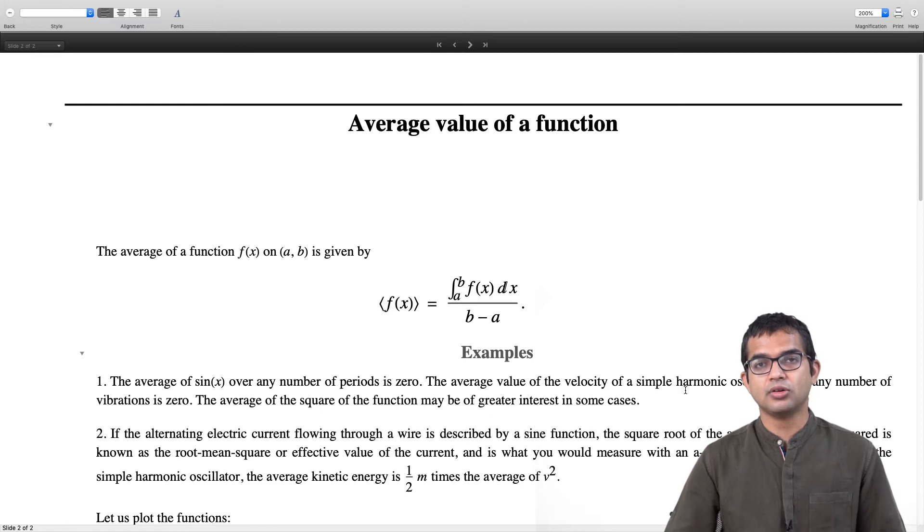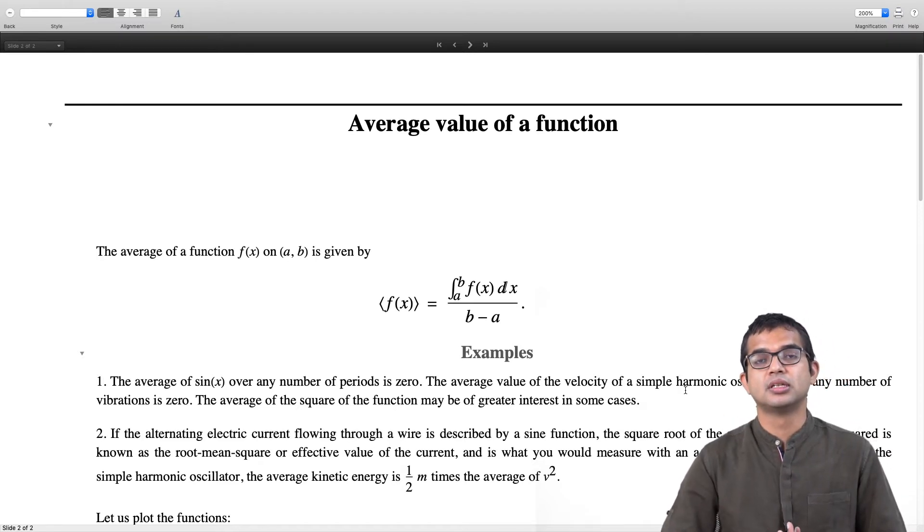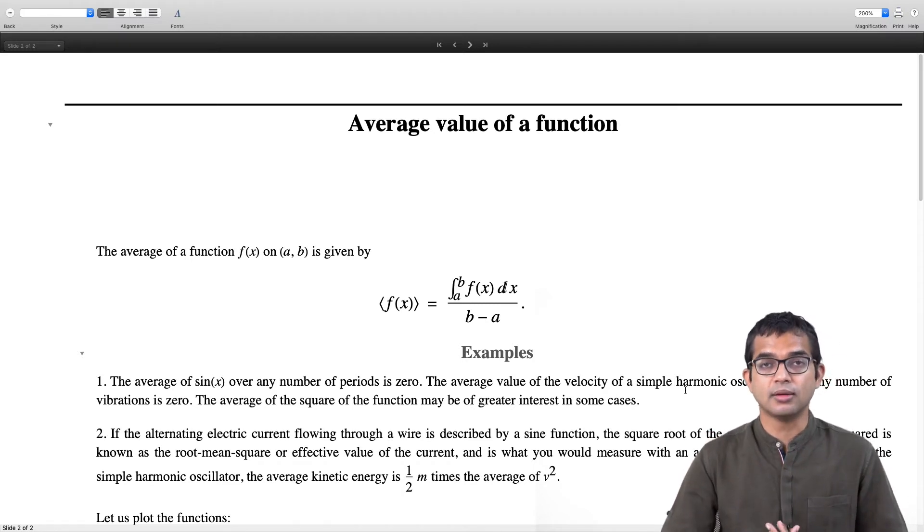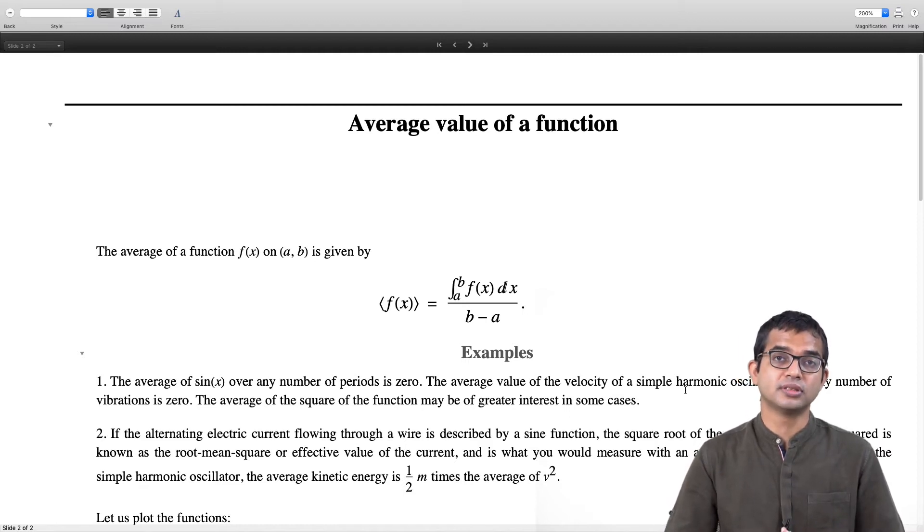Many times, more information may be contained in the average of the square of this function. If a function is spending equal amount of time above the time axis as it spends below the time axis, then although on average the function itself may be 0, the square of this function may also contain information.